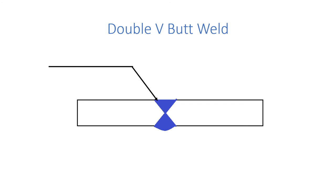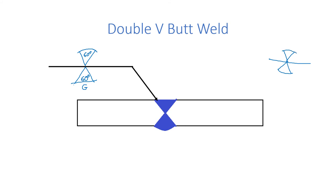For double V butt weld, towards the arrow side we have a V weld with flush contour and angle 60 degrees. On the other side we again have a V groove with convex surface, and the surface has been made flush by grinding, so we put G. If both the V grooves are having reinforcement, then the symbol would be shown accordingly. This is about the double V butt weld.